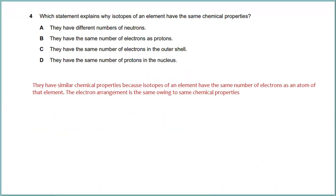Question four: which statement explains why isotopes of an element have the same chemical properties? The answer is that isotopes of an element have the same number of electrons, and the electron arrangement is the same, giving rise to the same chemical properties. They have the same number of electrons in their outer shells.